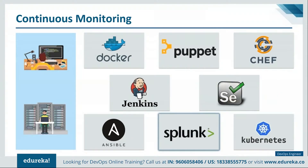To summarize: we started by understanding who is a DevOps engineer, then we understood that DevOps engineers are either developers or operations staff with additional skills like coding, cloud platforms such as Amazon Web Services, automated test and delivery tools, and logging and monitoring tools. Now it's time to understand what does it take to become a successful DevOps engineer.